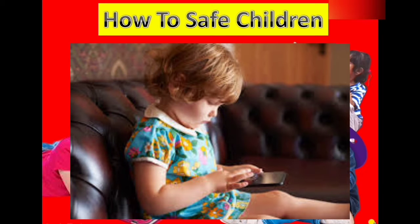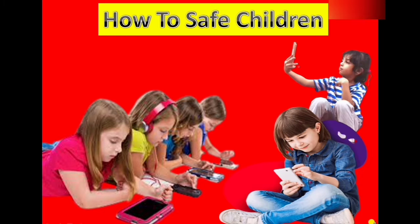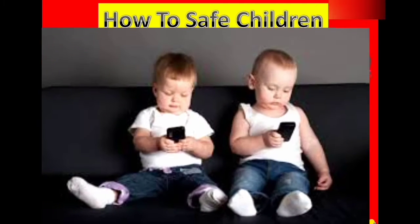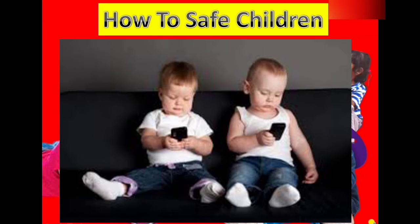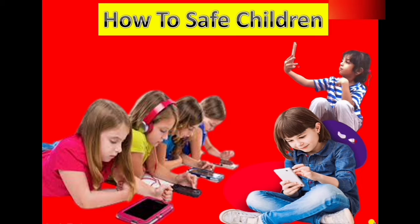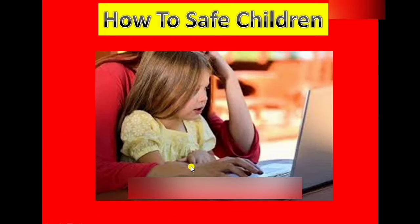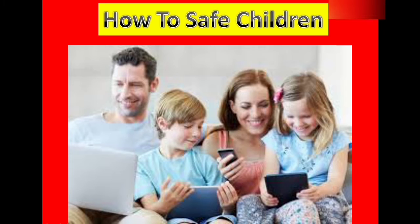Number five: show them how to keep themselves secure. Number six: learn from your child. Number seven: set parental controls. And number eight: do fun offline activities as a family together. When you follow these steps, inshallah your kids and child will be safe and do better.